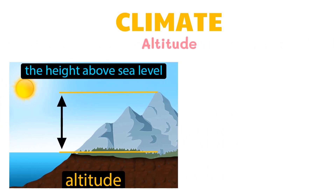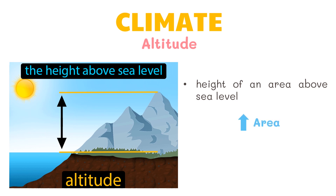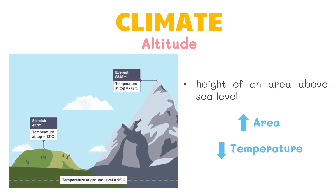Altitude is the height of an area above sea level. Generally, the higher an area is, the colder the temperature is. Temperature usually decreases by 1 degree Celsius for every 100 meters in altitude. Snow can be found on top of a high mountain even when the weather is warm in the valleys. Locations at a higher altitude have colder temperatures.